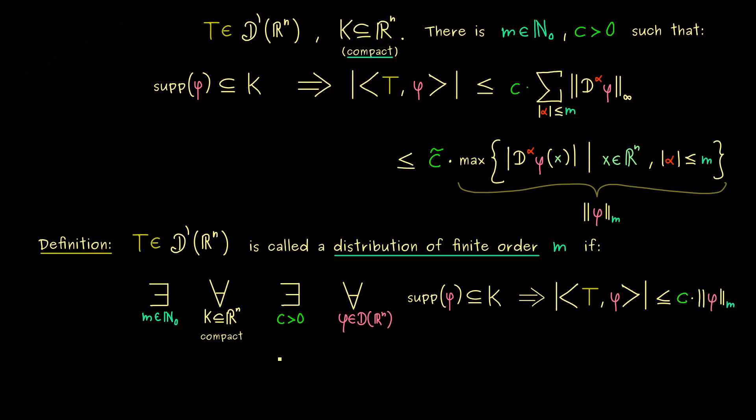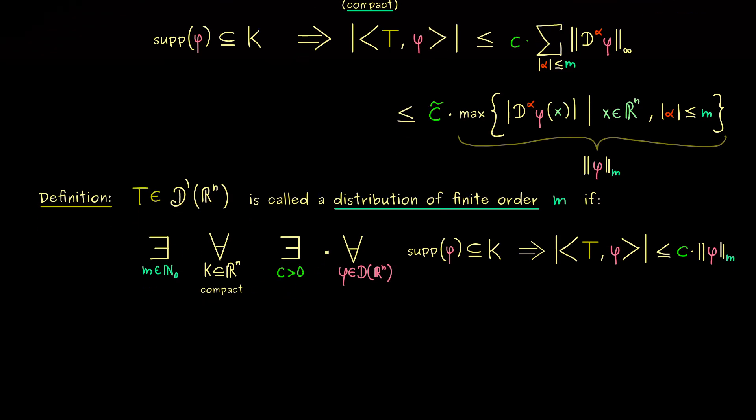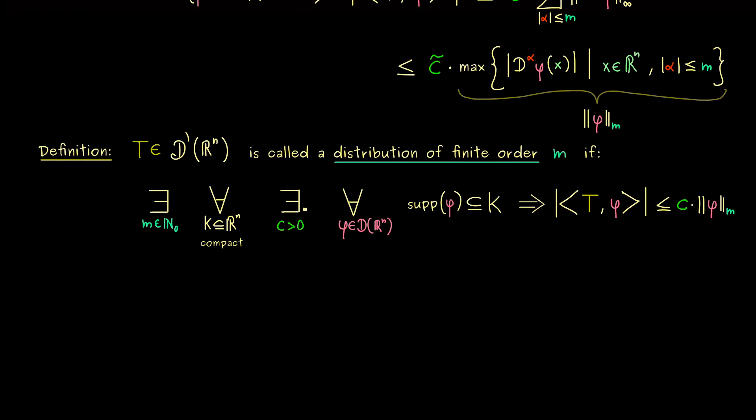Okay, so this is the definition, and you should immediately see this is definitely stronger than the claim from above because m should work for all compact sets at once. And exactly this property brings us to a special kind of distributions we call the finite order distributions.